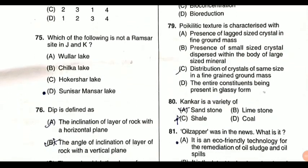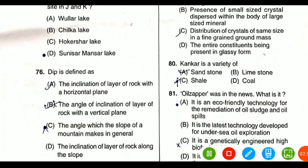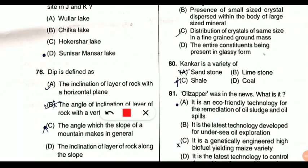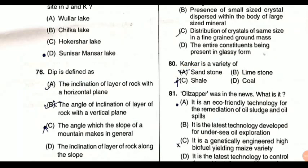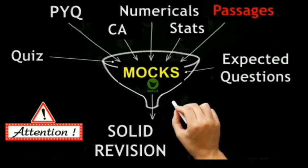Question 80: conquer is a variety of what. Conquer is actually a variety of limestone — specifically, conquer is the nodular form of limestone.